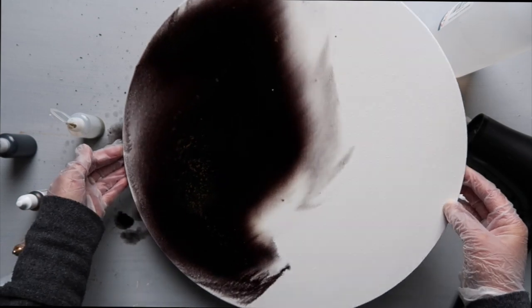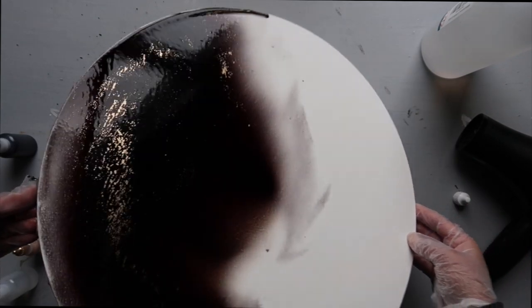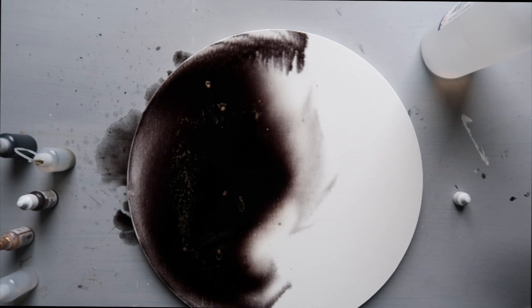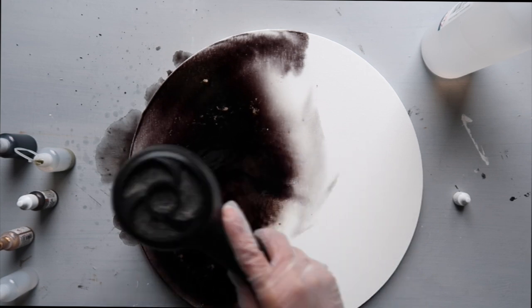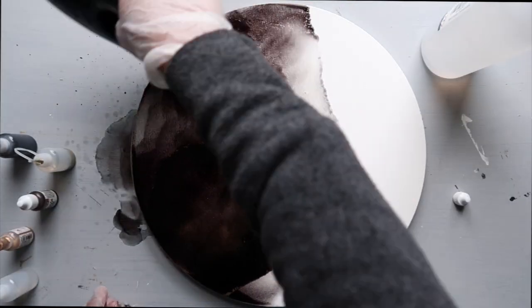So once that's done and I'm happy with the shape and the size of where I want my black to be, I'm just going to go ahead and grab my hair dryer on a low medium setting. And this is where the magic happens. This is the part that I love the most.